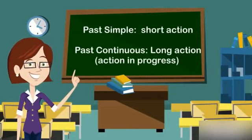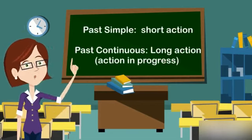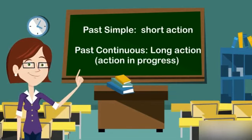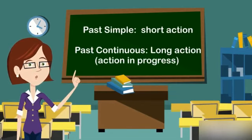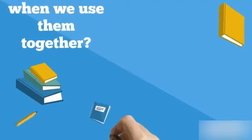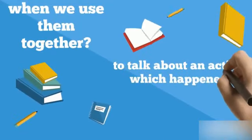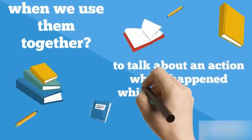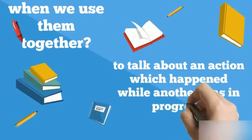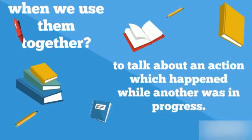To sum up, the past simple is used for short actions, and the past continuous is used for long actions — actions in progress. So when do we use them together? We use them together to talk about an action which happened while another was in progress.